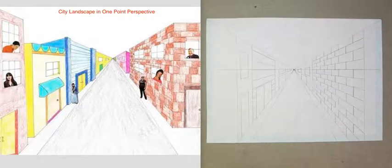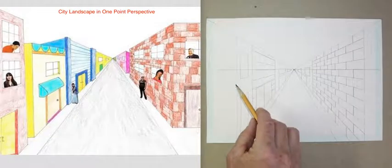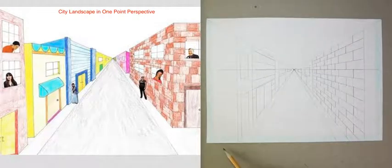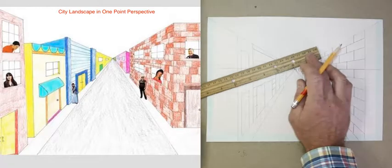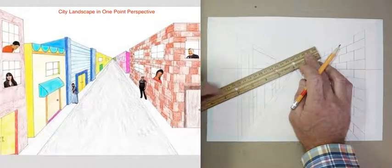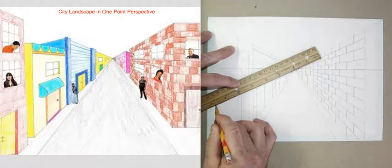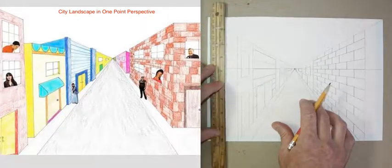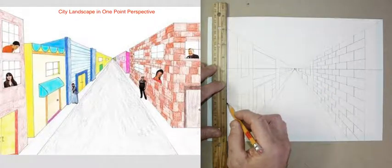Today we're going to continue by adding some windows on our other buildings and perhaps a couple more doors. When I look at my last building on the left, it needs a couple of windows up here and a large door down here that's actually going to go all the way down and off the page — you won't get to see all of the door. I'm going to continue my line that extended from my vanishing point and mark the tops of my doors all the way down, then use the vertical lines on the graph paper to make the two sides of the door parallel.